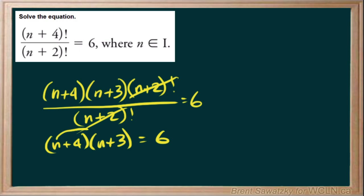So let's start by distributing this. n times n is n squared. n times 3 is 3n. 4 times n is 4n. And 4 times 3 is 12. And we still have a 6 on the right-hand side there.